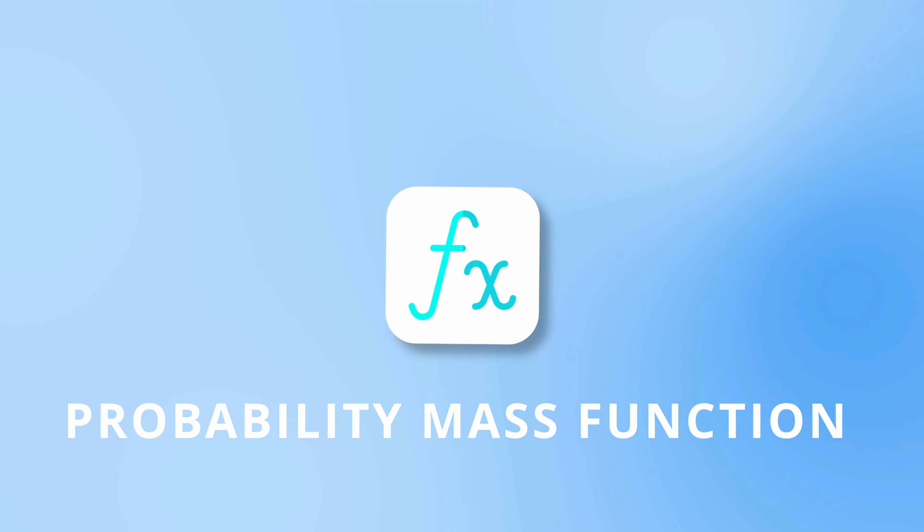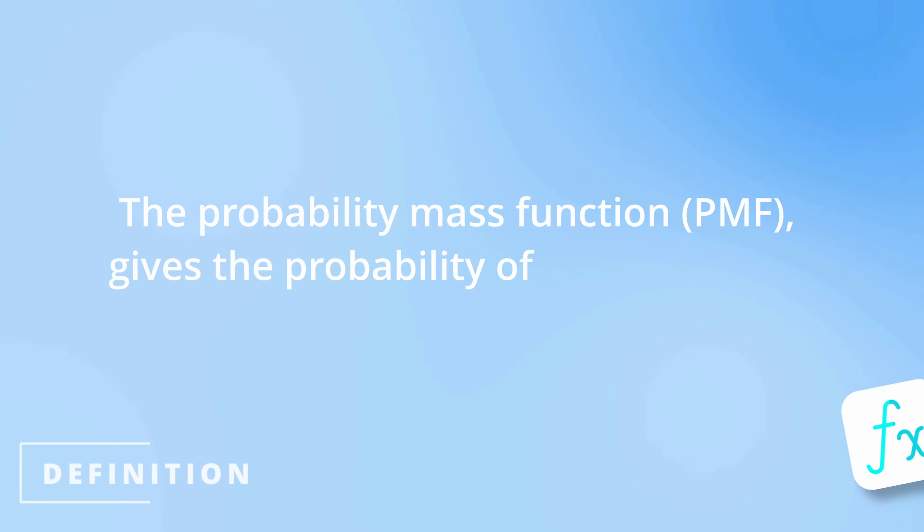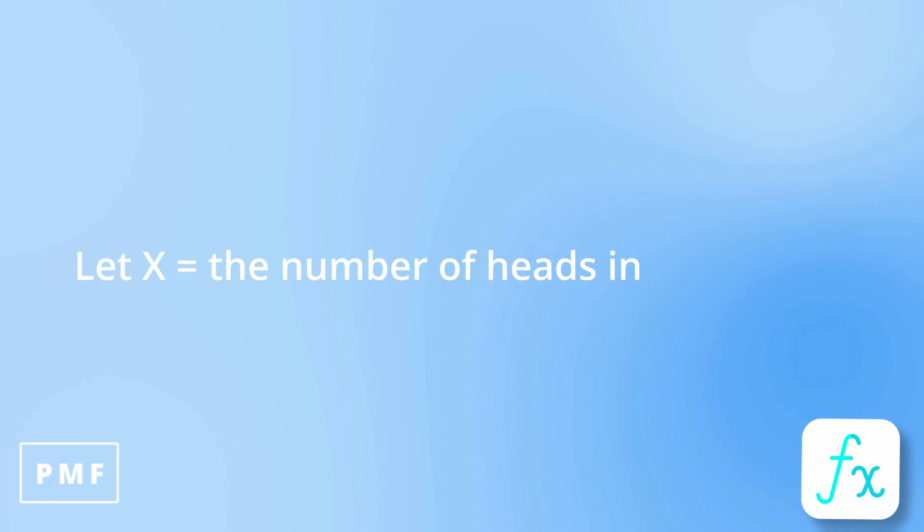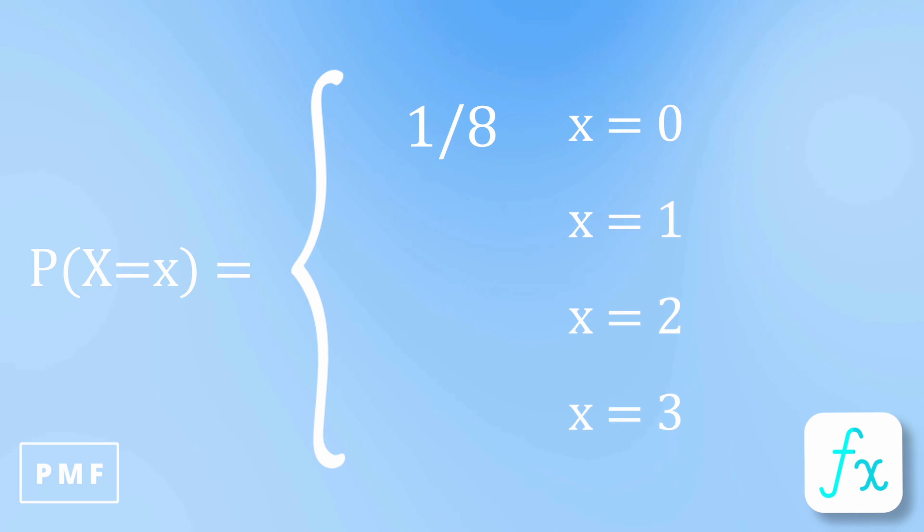The fundamental building block of a discrete random variable is its probability mass function. The probability mass function gives the probability of each outcome of the random variable. For example, if we let x represent the number of heads in three coin flips, the possible values of x are 0, 1, 2, and 3, and the respective probabilities are 1/8, 3/8, 3/8, and 1/8.